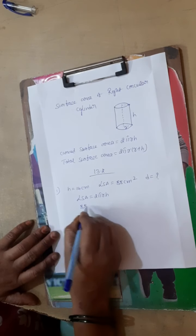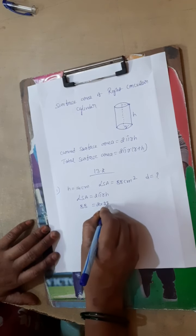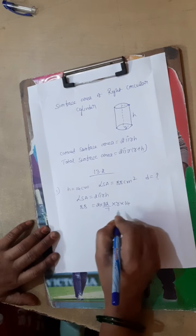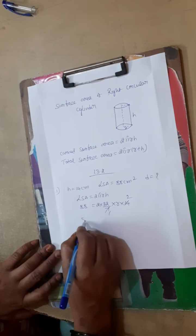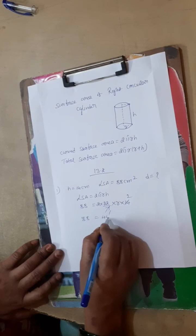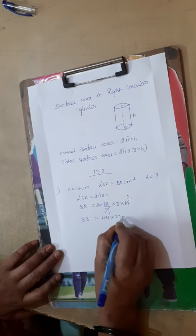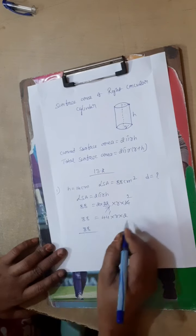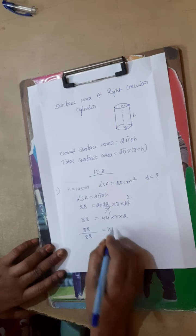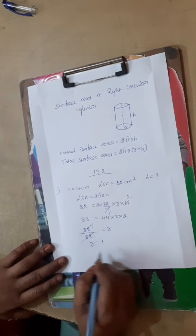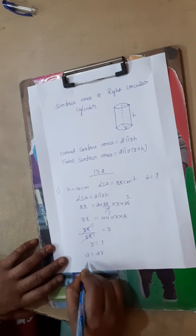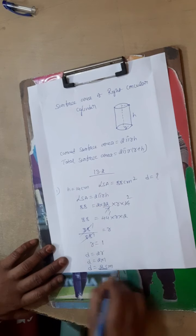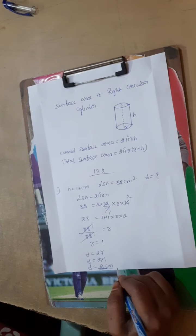So 88 is equal to 2 into 22/7 into r into 14. Simplifying: 88 equals 44 into r into 2. Therefore r is equal to 88 divided by 44 times 2, so r is equal to 1 centimetre. Hence diameter D is equal to 2 into 1, so D is equal to 2 centimetres.